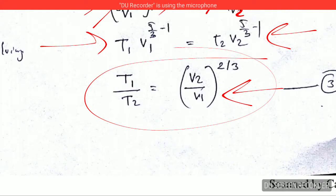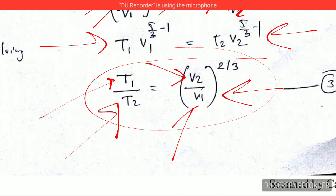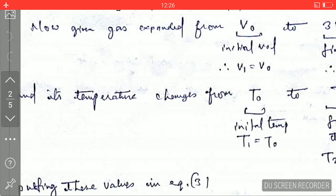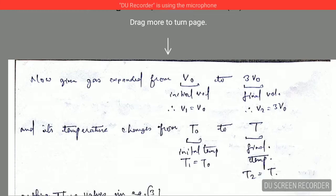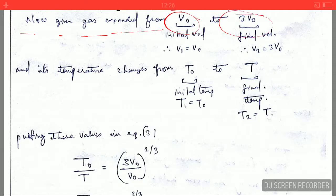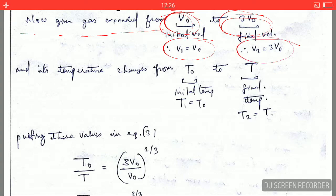So we arrive at the relation where T₁ is the initial temperature, T₂ is the final temperature, V₁ is the initial volume, and V₂ is the final volume. From the question, the gas expanded from V₀ to 3V₀, so V₁ = V₀ and V₂ = 3V₀.